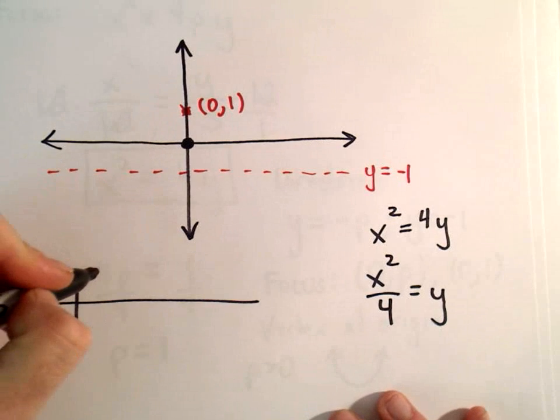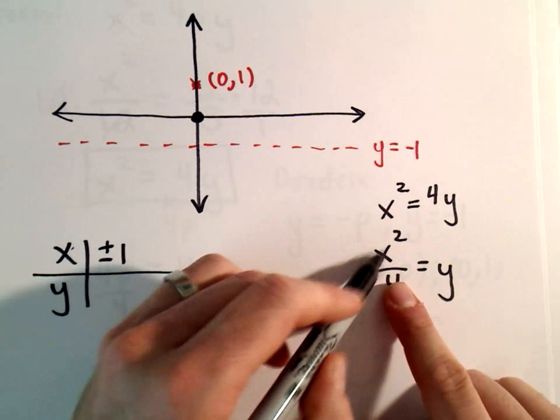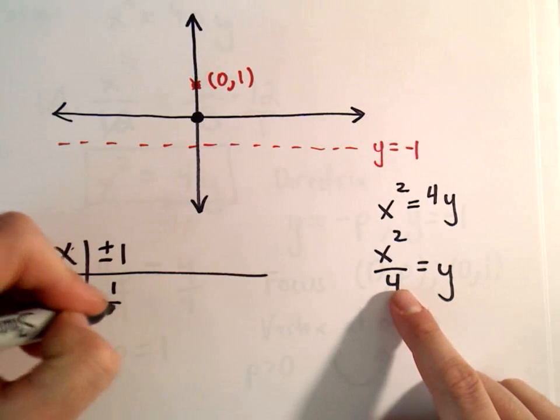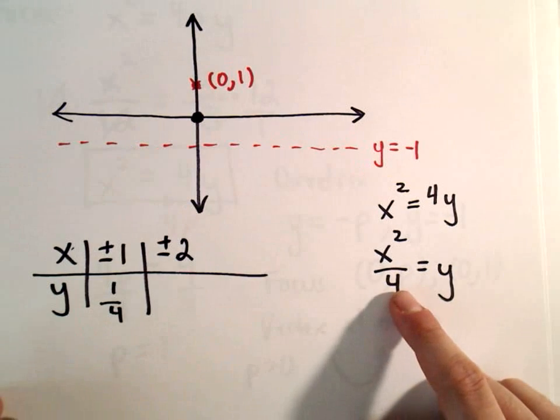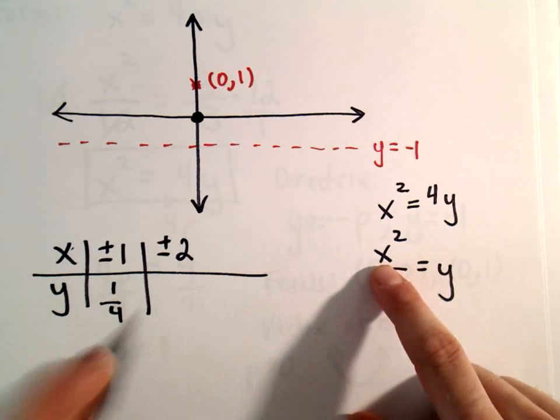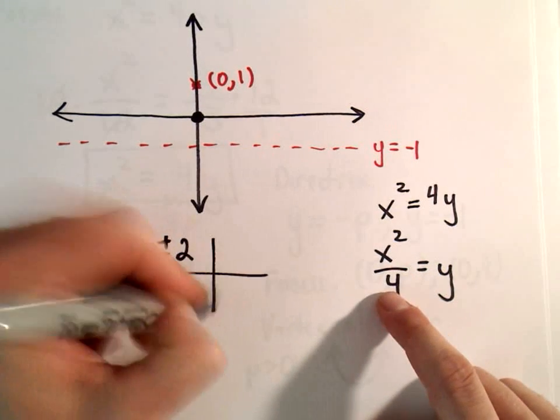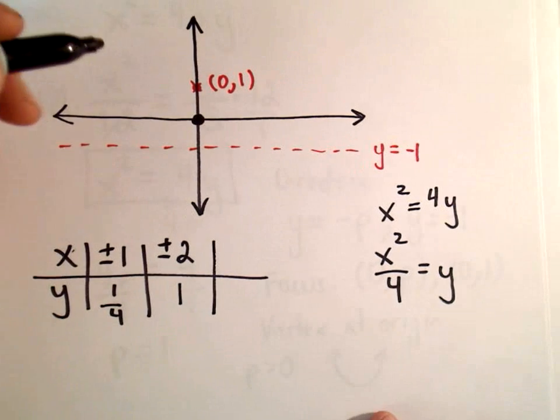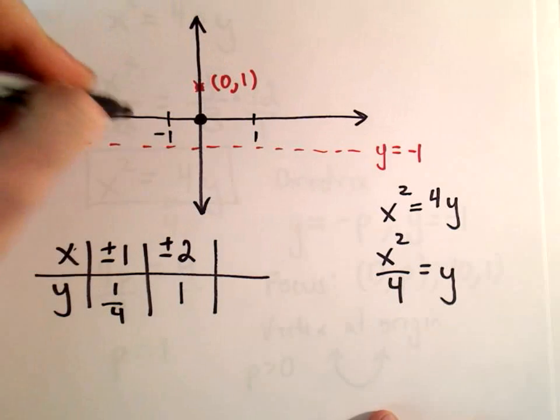If we plug in either positive or negative 1, if we square it, we're going to get 1 over 4. If we plug in positive or negative 2, either positive 2 squared or negative 2 squared will be 4 over 4, which gives us 1. You could always plot some more points. I think I'm just going to leave it right there.